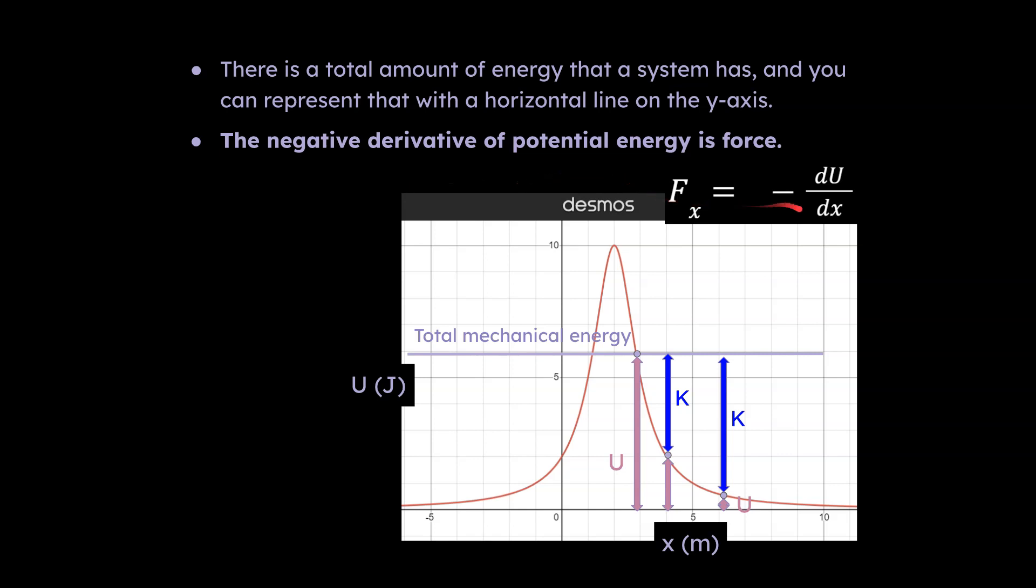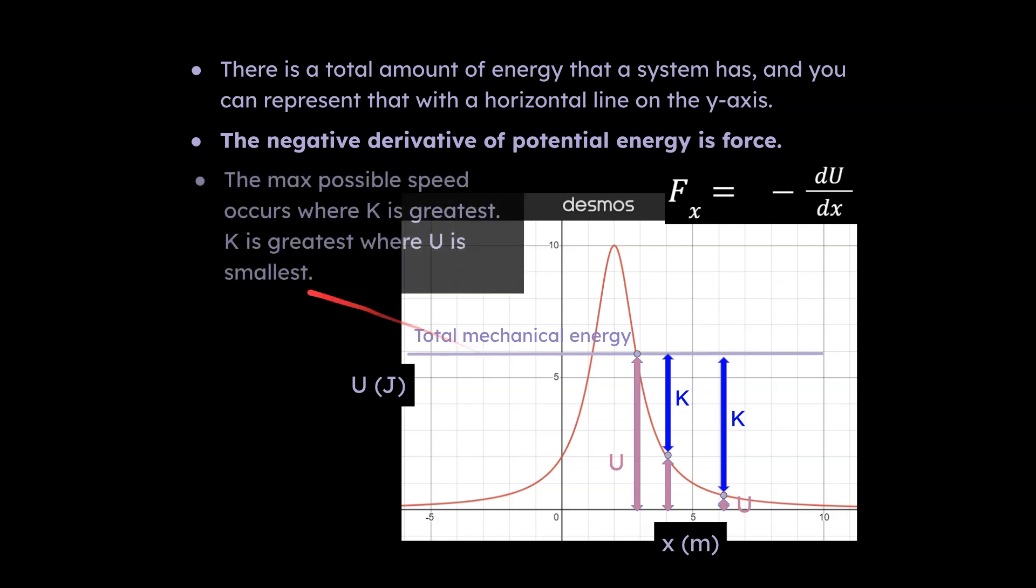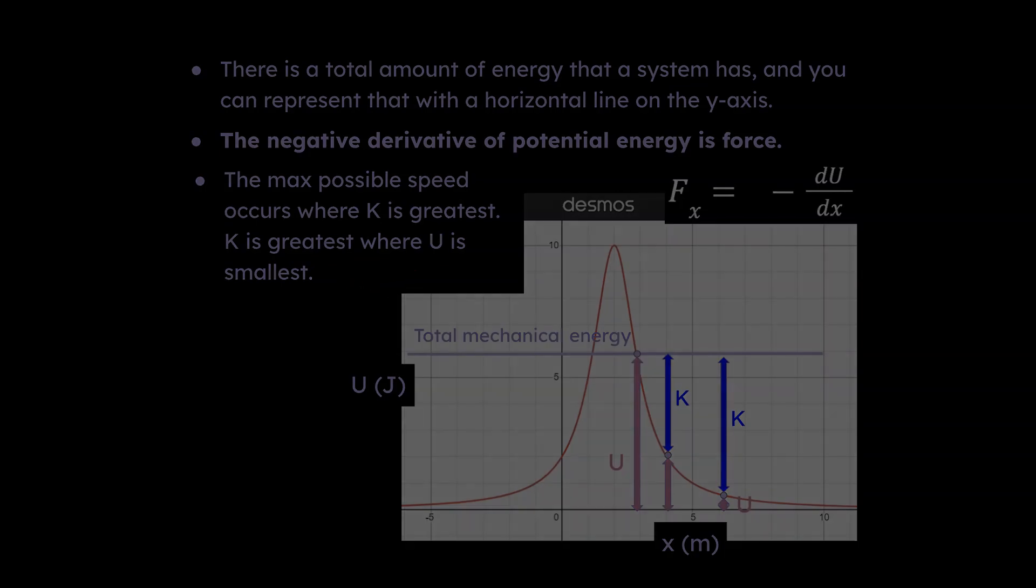I did say that the negative derivative of potential energy is force. So it is important to start thinking about the direction of the force on this object. Derivative in terms of a graph would represent the slope. If you think about the object right here, what would be the direction of the force? The derivative of this curve is going to be a negative slope, and the negative of that negative would be a positive. So this would be a positive force applied on this object. Another way to think about that is the force is just going to point downhill. The maximum possible speed occurs where kinetic energy is greatest, and kinetic energy is greatest where U is smallest.